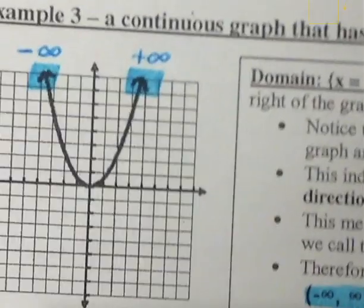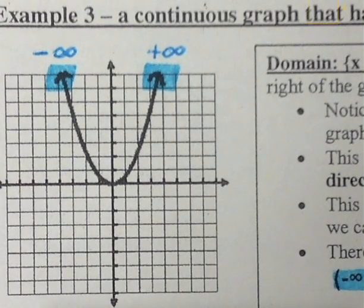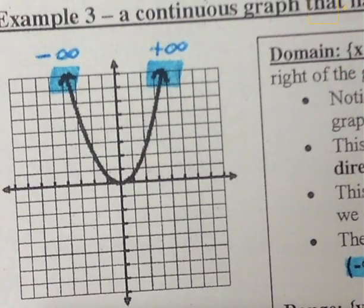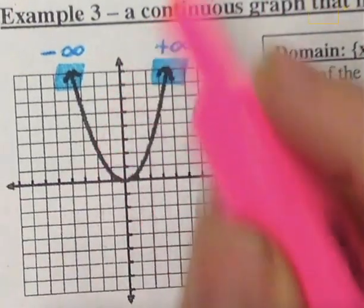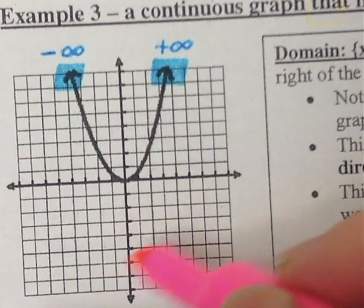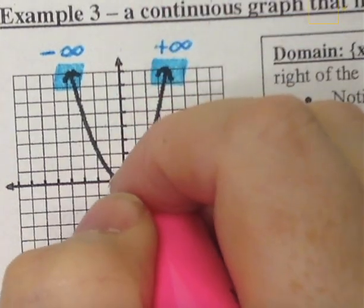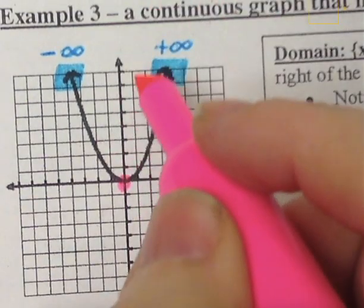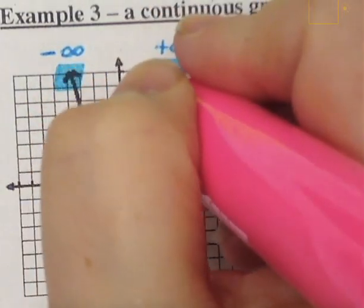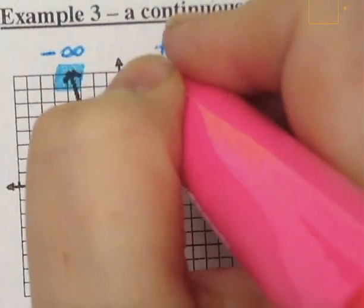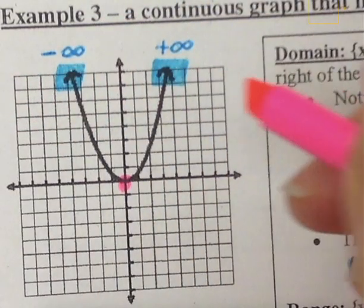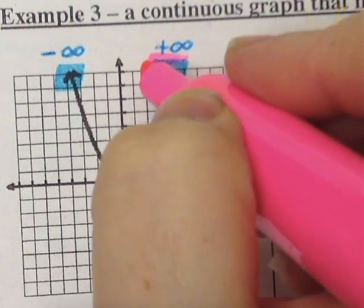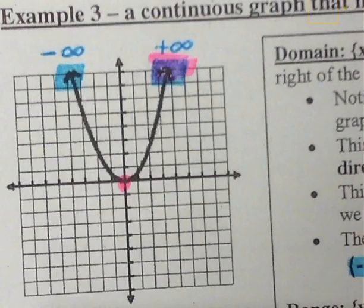For the range, I'm going to use pink. I need the point that is the lowest point on the graph. Looking from the bottom going up to the top, this is the first point that we come to. Then as I keep going to the top, I end up reaching the arrows. Both of these arrows are pointing in the same direction, so I can highlight one of the arrows and say that's my highest point, because both of these are going to the same location.